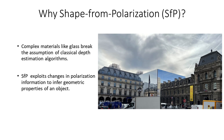Complex materials like glass break the assumption of classical depth estimation algorithms. Shape from polarization exploits changes in polarization information to infer geometric properties of an object.